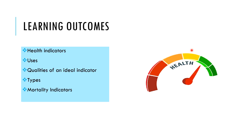We will be discussing why these are important and their significance in this lecture. The learning outcomes include: different uses of health indicators, the qualities of an ideal health indicator, different types of health indicators, and then we will discuss mortality indicators in detail.